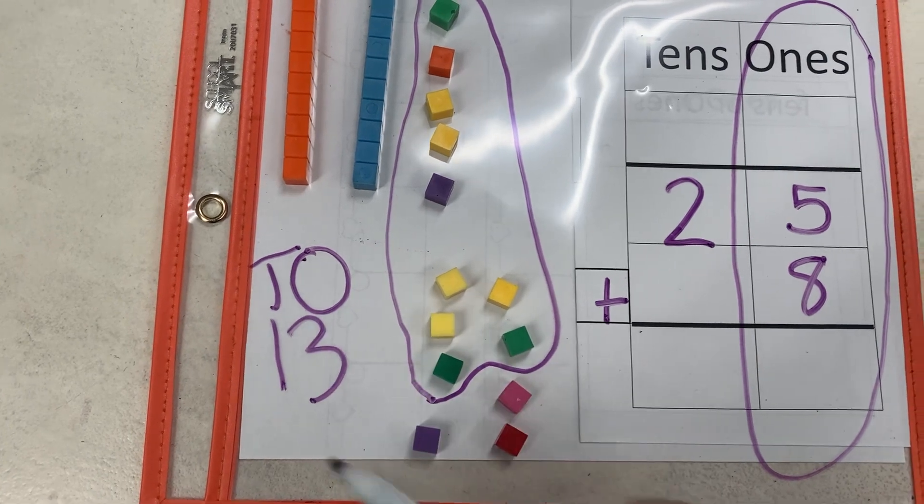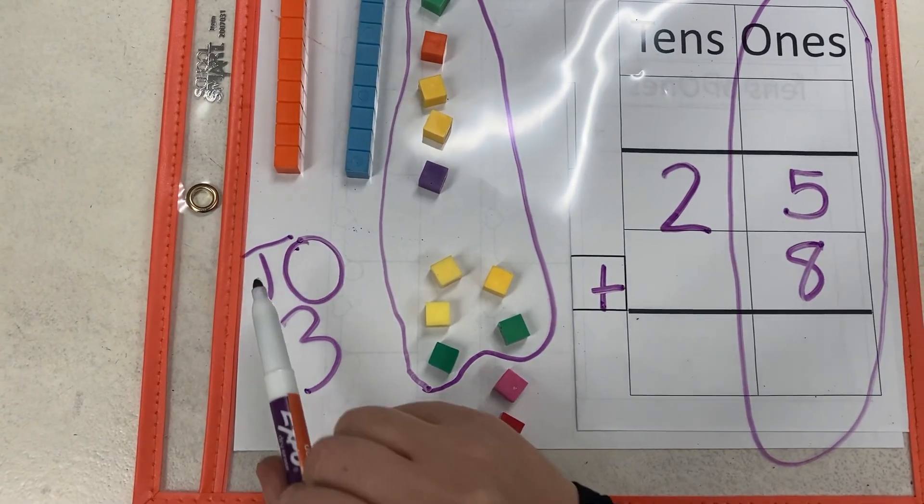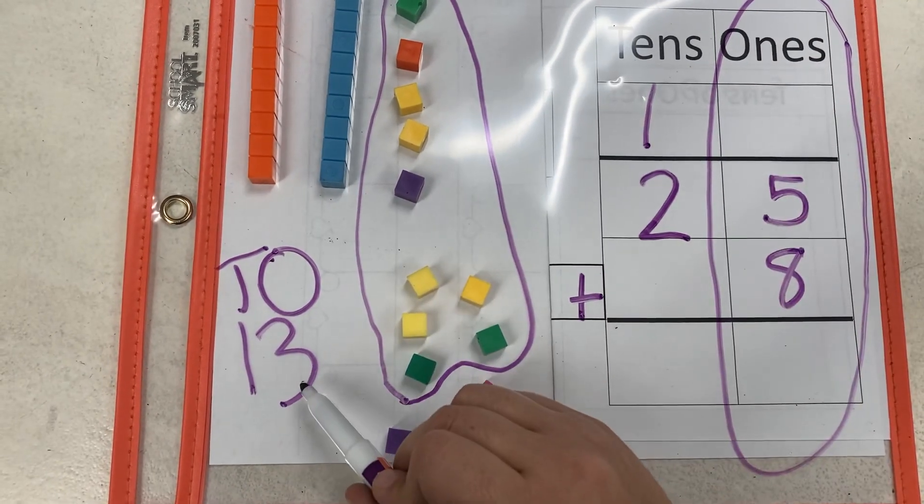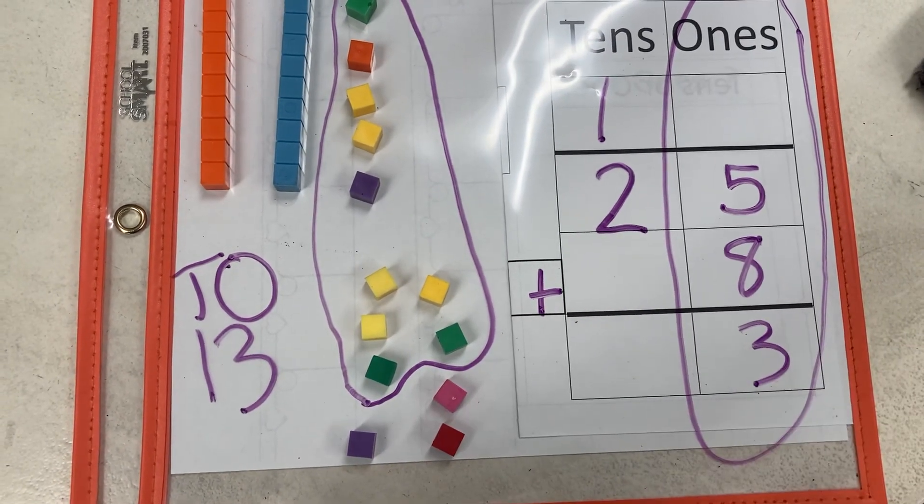One new 10 and three extra ones because 5 plus 8 is 13. So I'm going to put my one new 10 up here on top of my tens and I'm going to put my three ones down here underneath my ones.